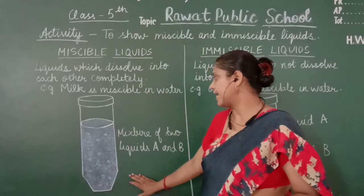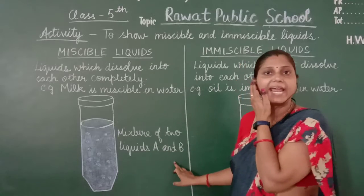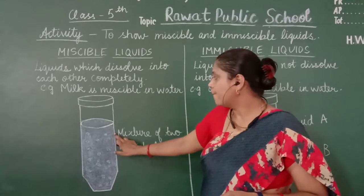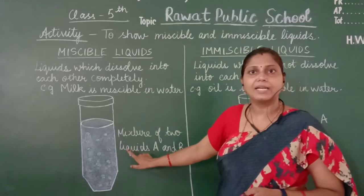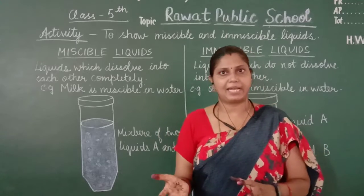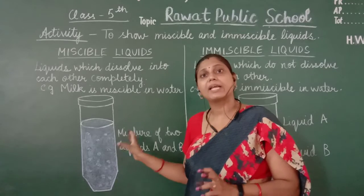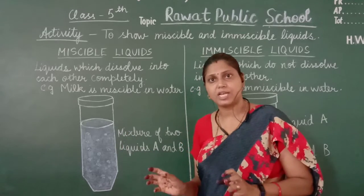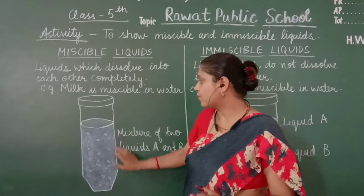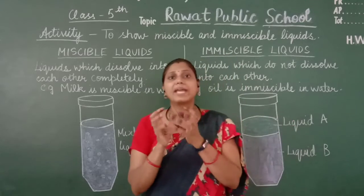This is shown in a diagram. The diagram shows the mixture of two liquids, A and B. Two liquids are added — you can say they are two colors, purple and blue. Purple is for water and blue is for milk. These two liquids are completely dissolved and mixed together; the particles are mixed with one another.